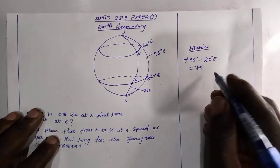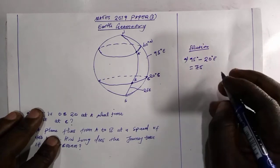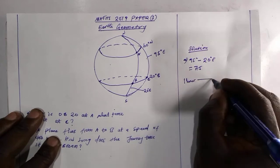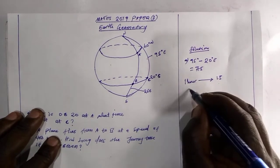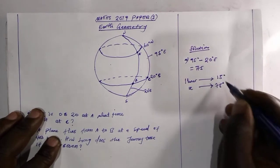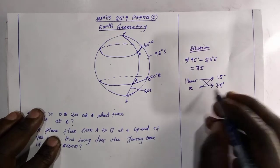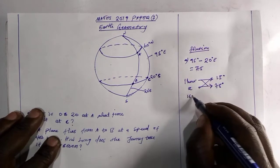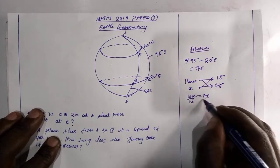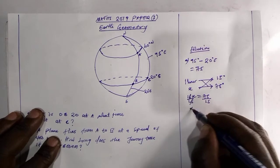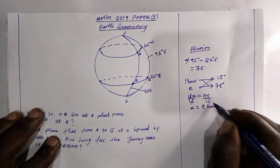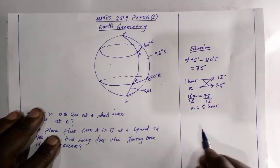Then we have to know how many hours are in 75. So we all know that one hour represents 15 degree. What about the hour? We don't know. And the degree we have are 75 degree here. So which means when you cross-multiply, you are going to have 15X equals 75. When you divide by 15, then X is 5.